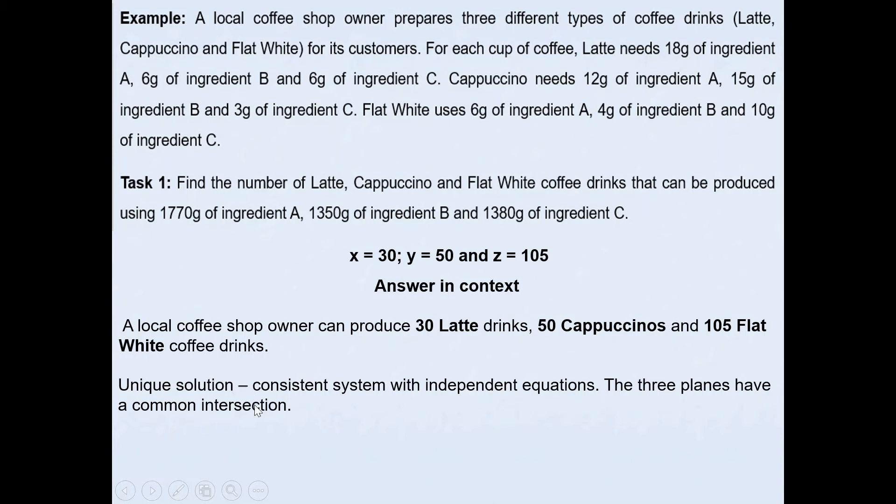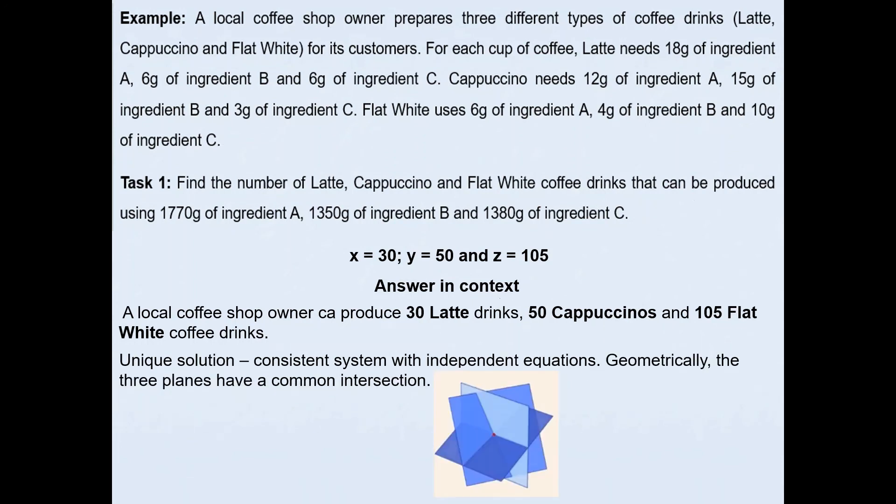This is a unique solution, consistent system with independent equations, and the three planes will have a common intersection. This part is not required for achieve, but if you have the answers, you could have easily used a graphics calculator to work out the answers. To achieve, you will need to form equations and then solve. You can solve it algebraically or using graphics calculator. Once you've got the values for x, y, and z, you must answer the question in context. If you wrote a sentence like so, you will qualify for achieve.